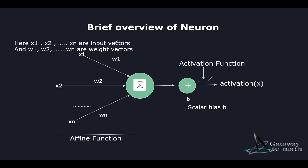We see here the activation of a single computation unit in a neural network. Here x1, x2 until xn are the input vectors and w1, w2 until wn are the weight vectors. We have a summation operator here. The function of the summation operator is to sum the dot products of the input and weight vectors. The output of the summation operator is added to a scalar bias p.